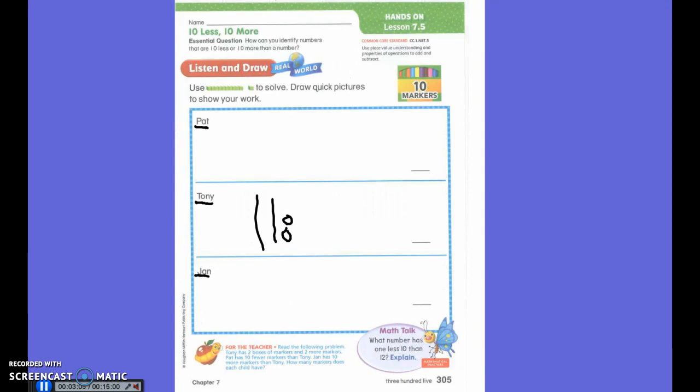Pat. Which one is Pat? Above or below Tony? Above. Above. Okay. Pat has ten fewer markers. So, if she has the same as Tony, but ten fewer, what am I not going to draw?